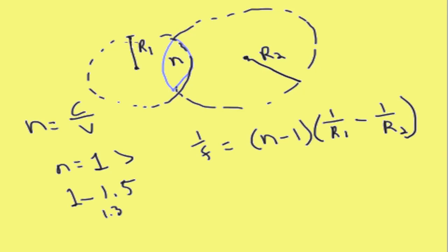So this radius here is defined as positive if it creates a convex shape, and this radius over here is defined as positive if it defines a concave shape.